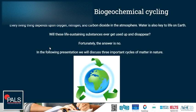These important elements of life — carbon, oxygen, nitrogen, and hydrogen — continuously cycle through different parts of our planet and through ecosystems.